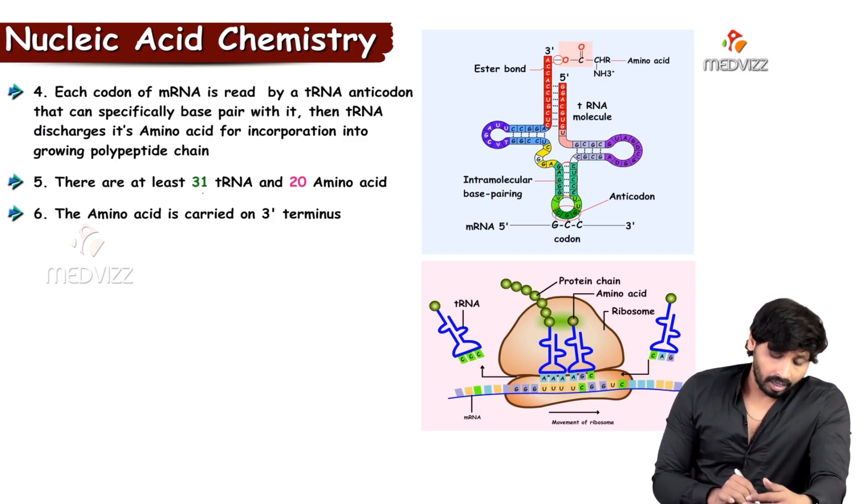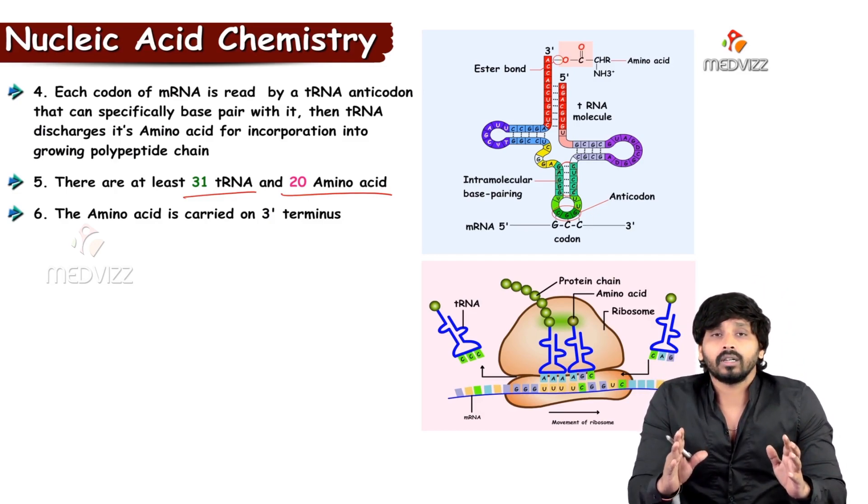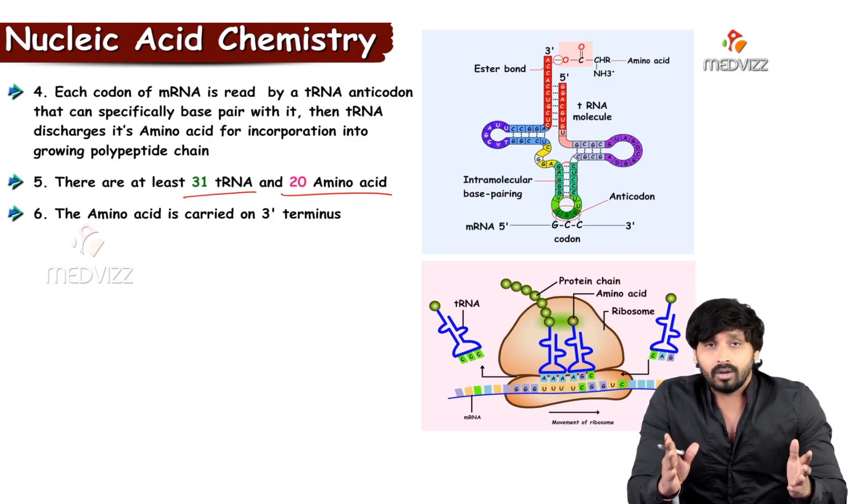There are at least 31 tRNAs. That means 20 amino acids, but the tRNAs are 31.